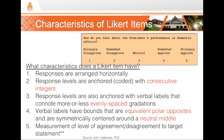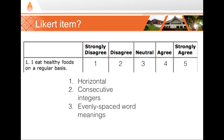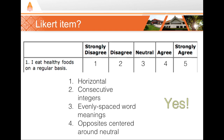Let's look at some examples. Is this question a Likert item? It says: 'Select your level of agreement with the statement: I eat healthy foods on a regular basis.' Disregarding the ambiguity in the statement itself, the choices are arranged horizontally, the integers are consecutive (one through five), the words are evenly spaced using the standard strongly disagree to strongly agree scale, the ends are opposites centered around a neutral. Yes — this meets all criteria, so it is a Likert item.